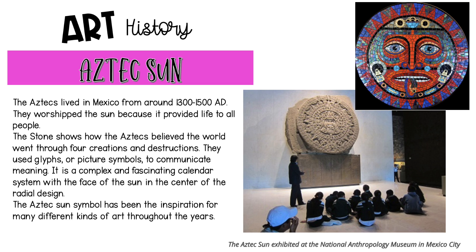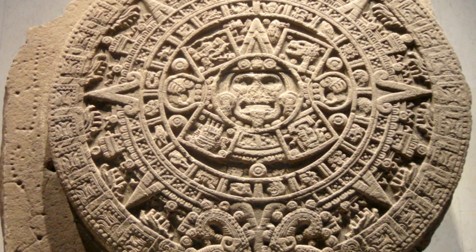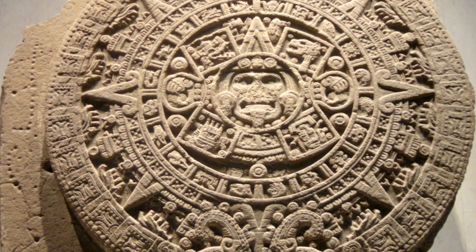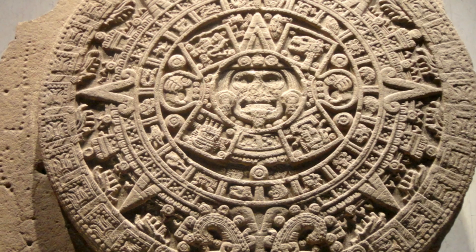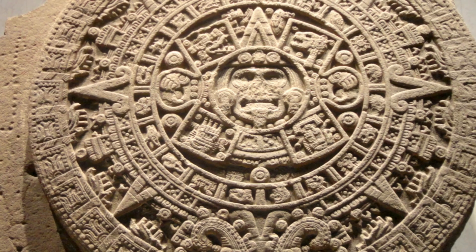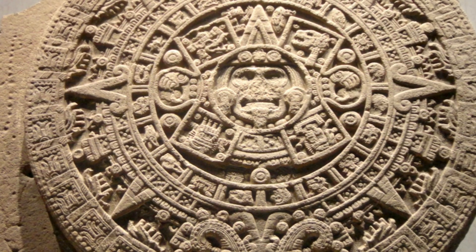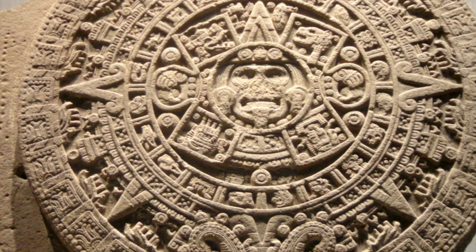The Aztec Sun symbol has been the inspiration for many different kinds of art throughout the years. The Aztec Sun is perhaps Mexico's most famous sculpture. It measures almost 12 feet across and weighs almost 25 tons. It's carved out of solidified lava and is now displayed at Mexico's National Museum of Anthropology.